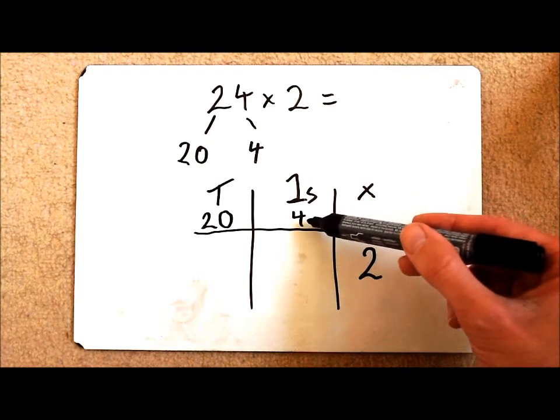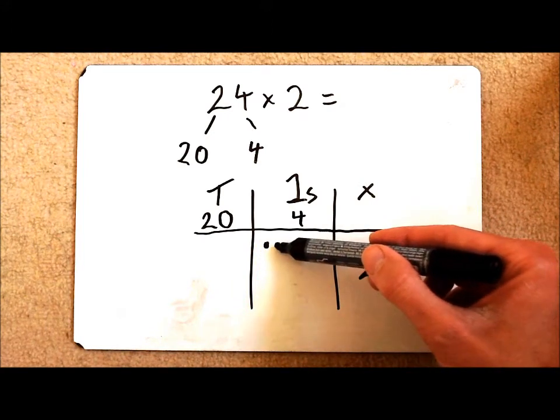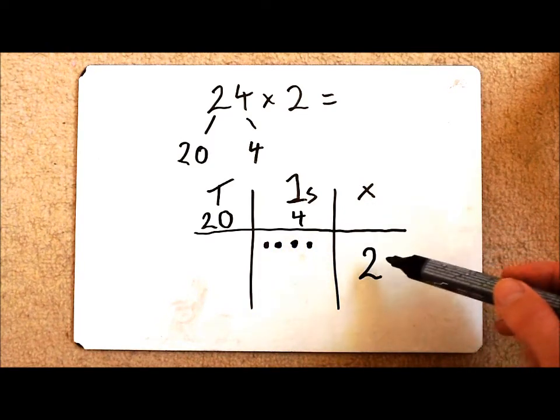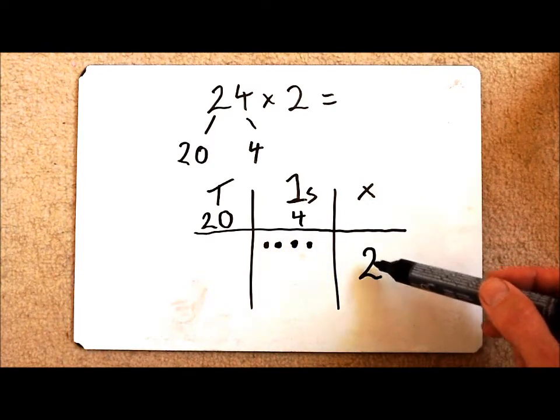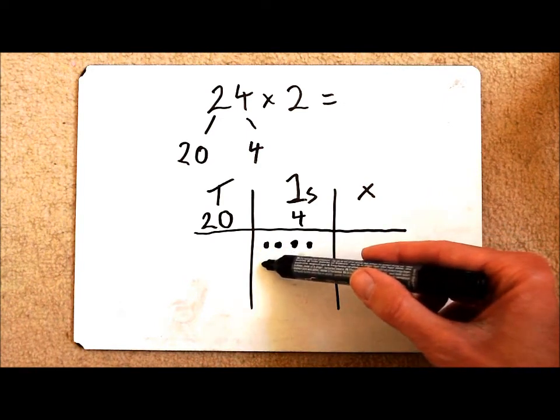So my array for the number 4, if I was using base 10, would be 1, 2, 3, 4. But I need 2 of them. So this is only 1 row of 4, 1 lot of 4. And I need another lot of 4.